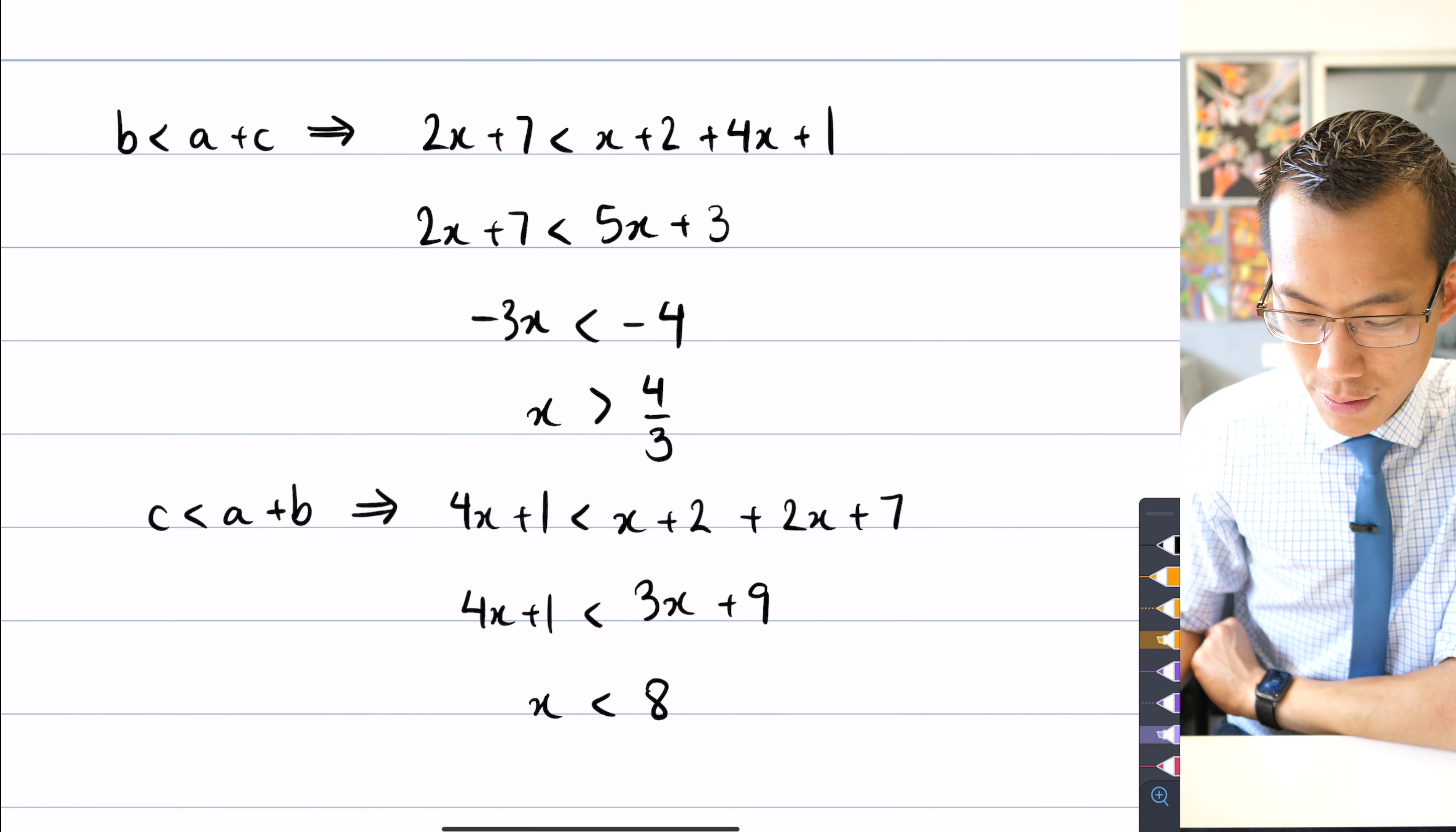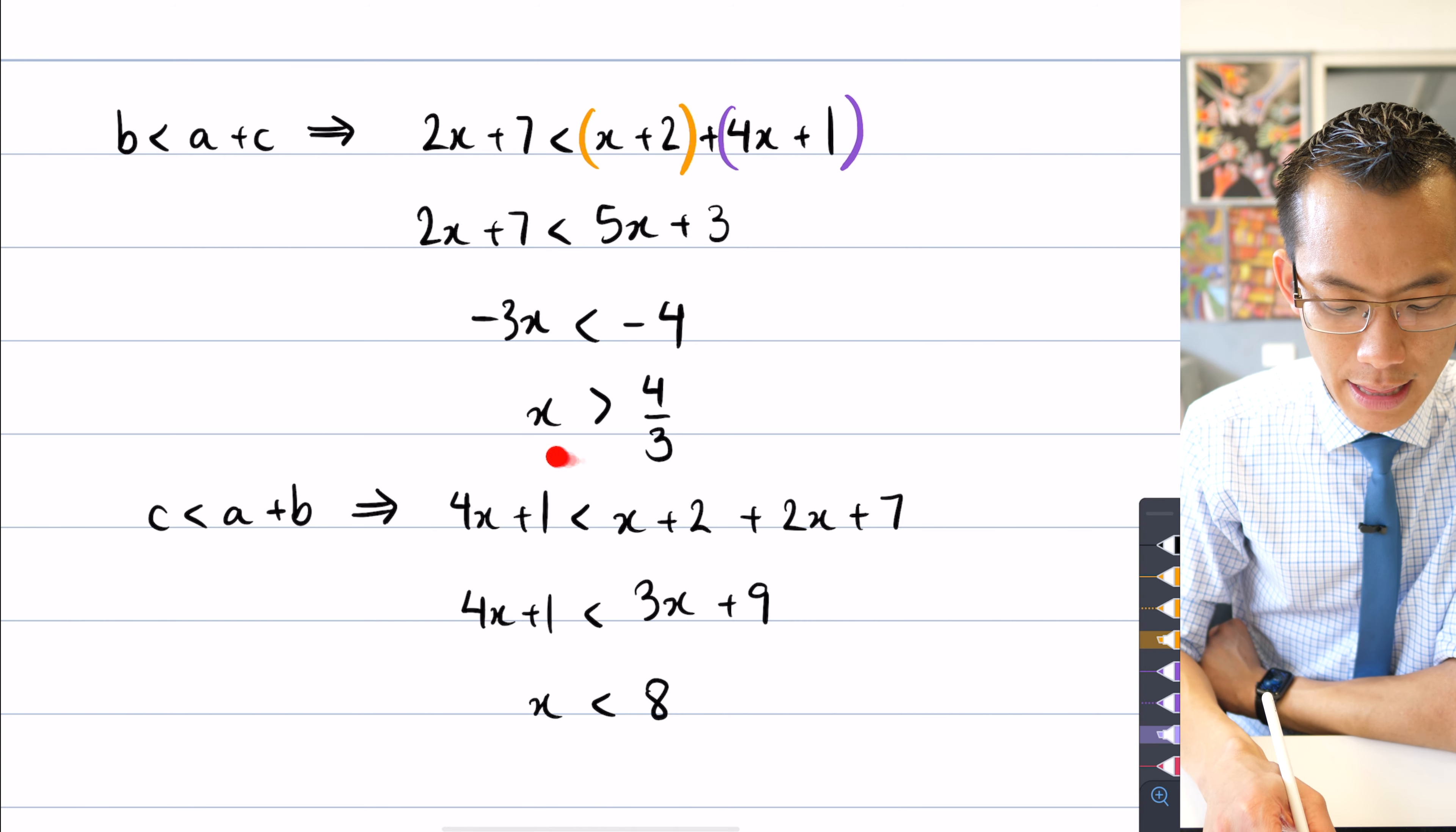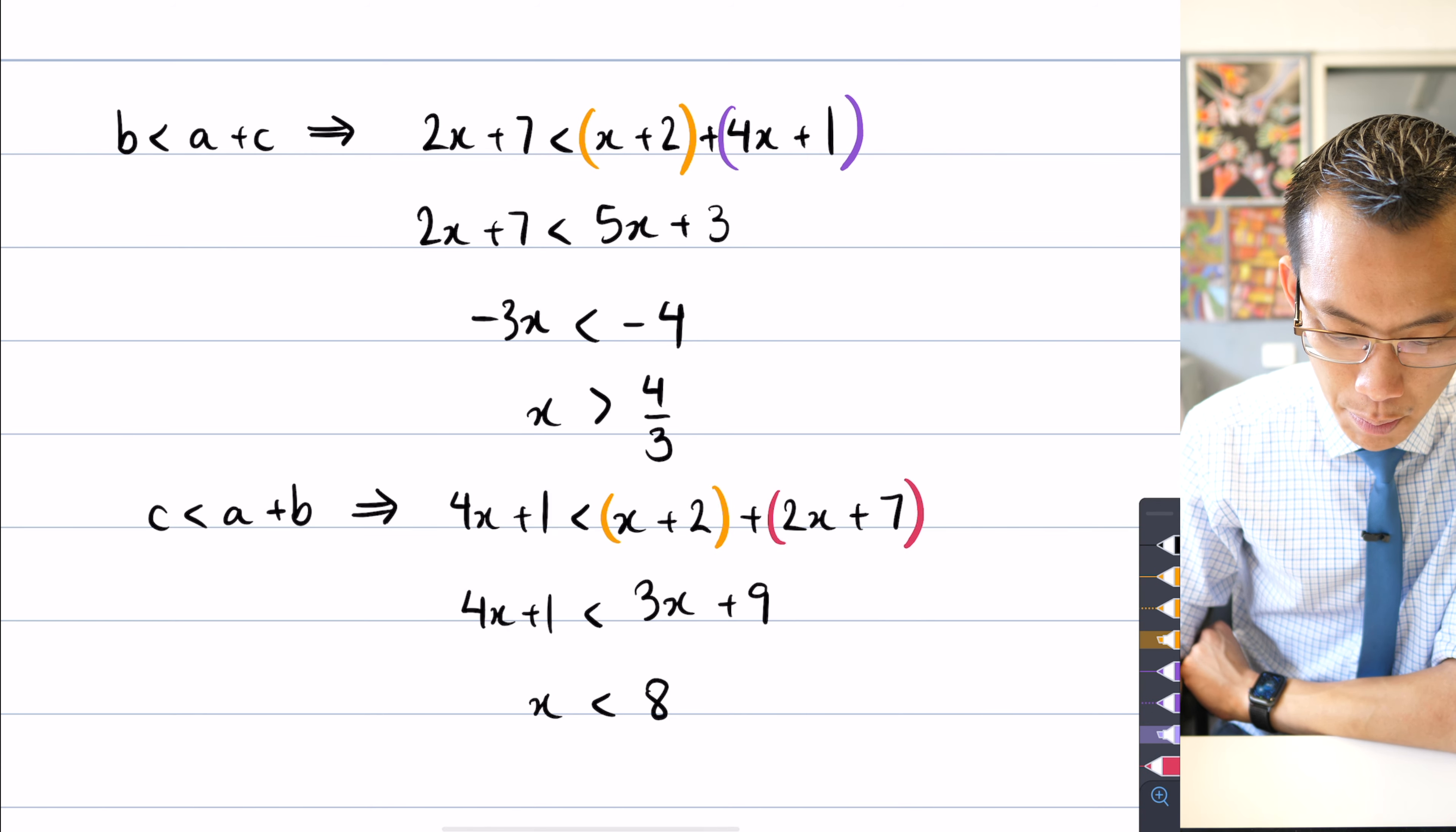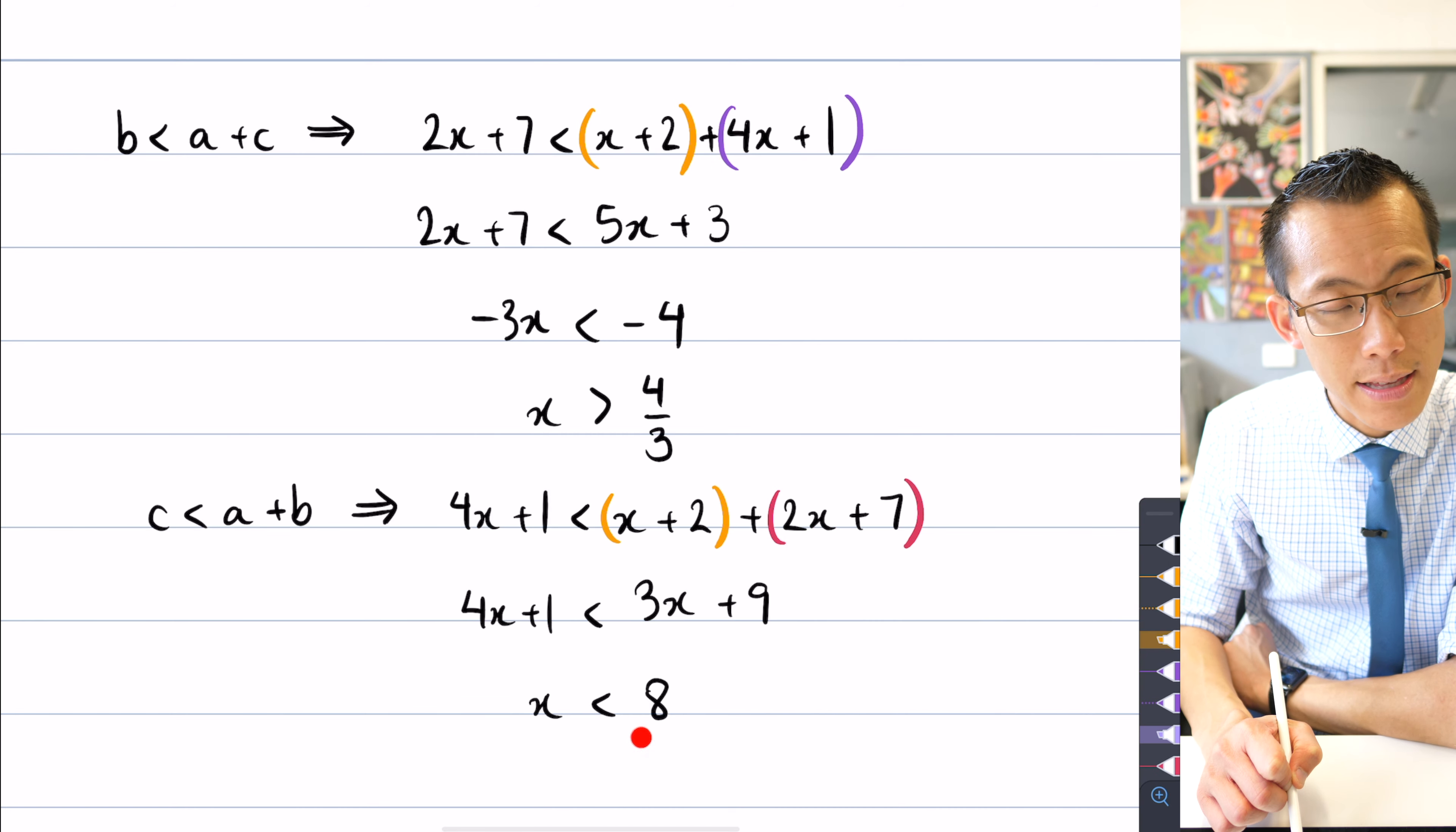But then when I have a look at the other sides, you get more interesting results when you compare the different sides. So here's b, and then here is a and c. When I go ahead and do the algebra for this, I can see that x has to be greater than 4 thirds. And then when I do a similar thing down here, here's c again, and then here is a and b. You can see here, when I go ahead and do this, I actually have the inequality facing the other direction, that x has to be less than 8.